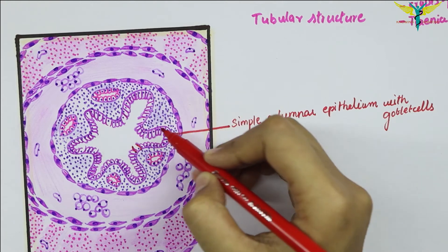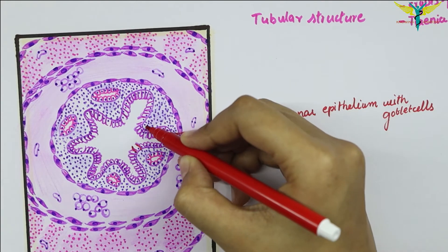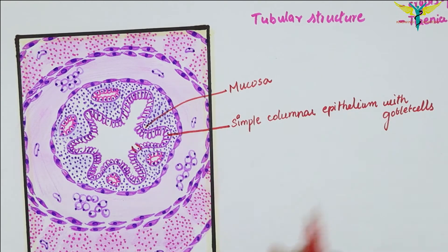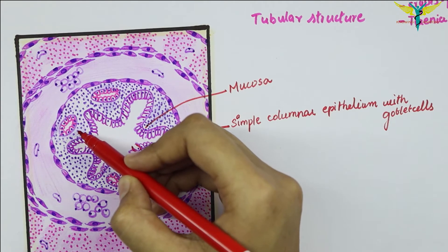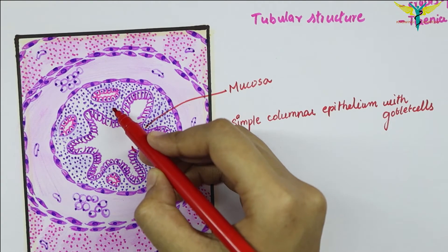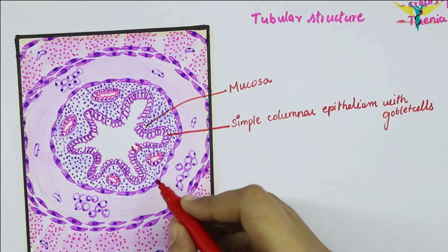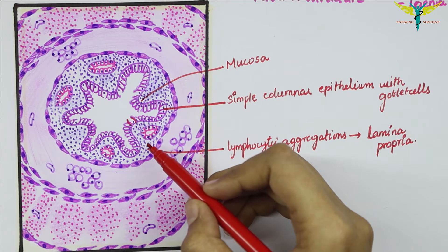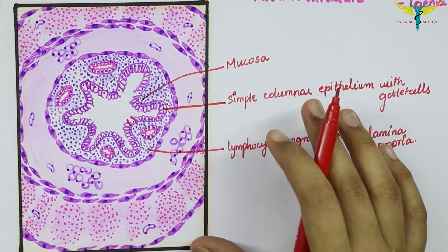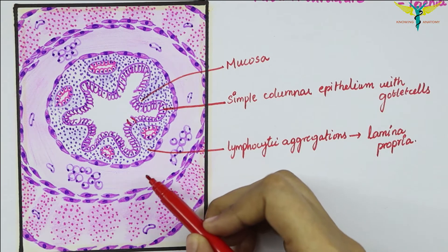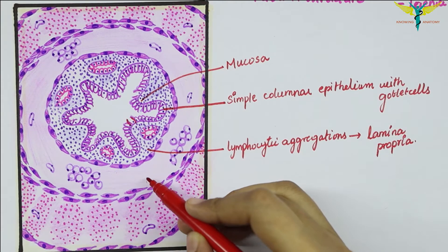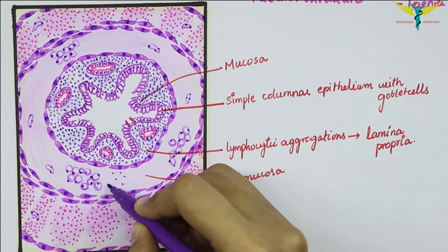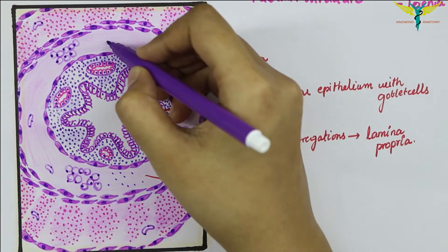The crypts in the vermiform appendix are poorly formed. You can see the presence of scattered lymphocytes and aggregated nodules of lymphocytes in the lamina propria of the mucosa — these are the lymphocytic aggregations present in the lamina propria. These lymphocytic aggregations continue into the next layer, the submucosa, which also shows a variable number of lymphatic nodules extending from the mucosa.